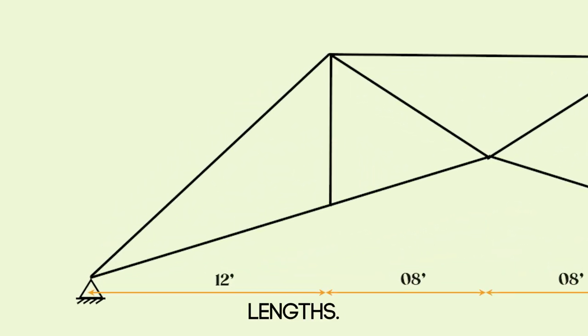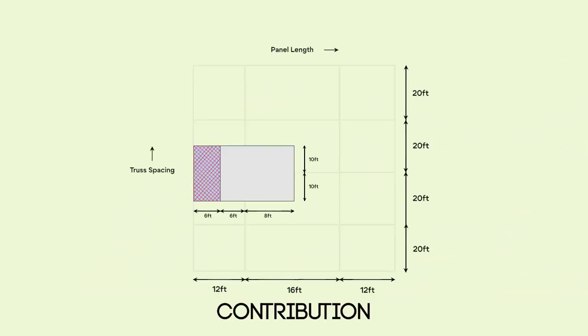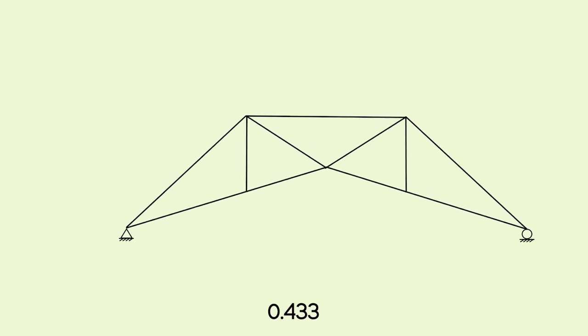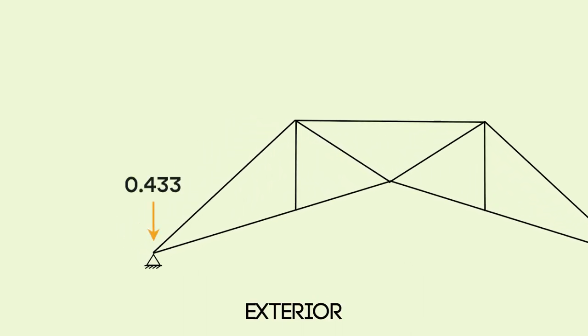For the truss with different panel lengths, we have to use area of contribution approach. We have calculated the area of contribution for each panel point, and it came out as 0.433 on the exterior panel point of the truss, rather than 0.5 and 1.0 on the interior panel points.